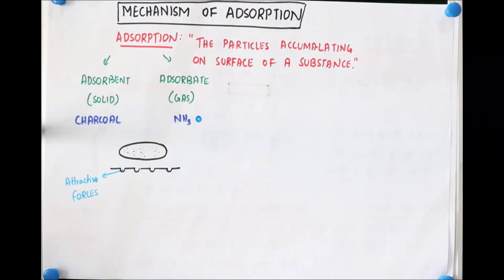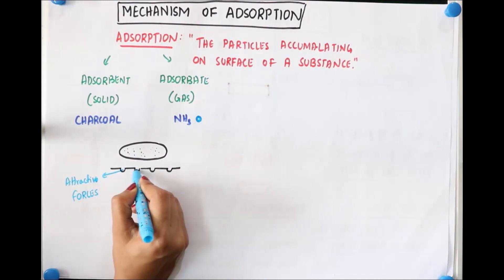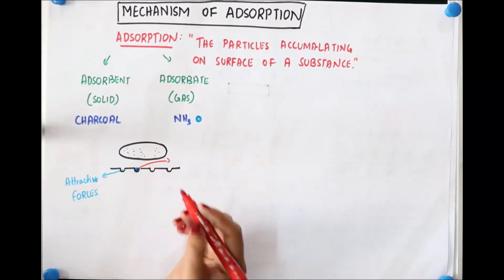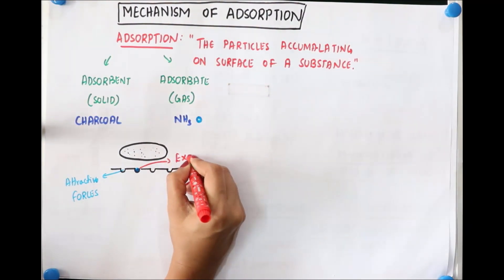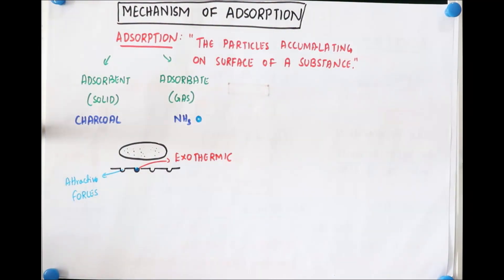Present on the surface of charcoal, okay? So that attractive force can be anything, it can be physical or it can be chemical. So when this ammonia particle comes and adsorbs on the surface, what happens here is large amount of heat is liberated. We can call this reaction as exothermic, because you might have studied in your lower classes that exothermic reaction means...